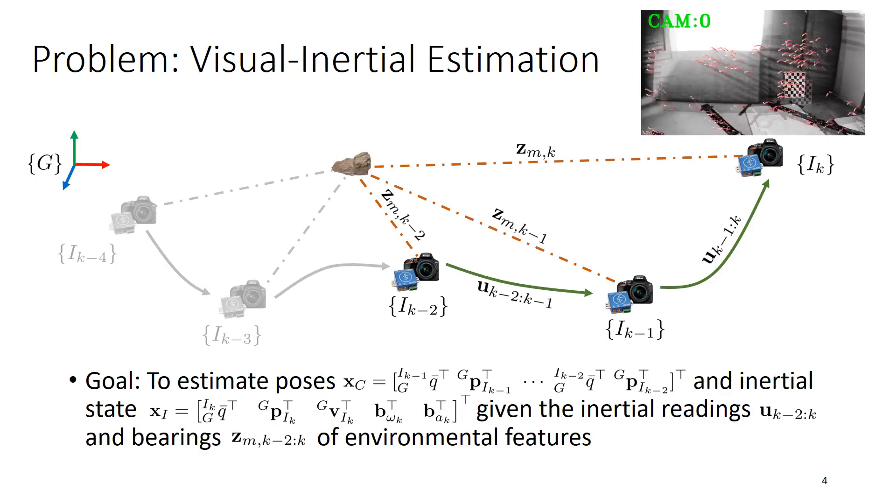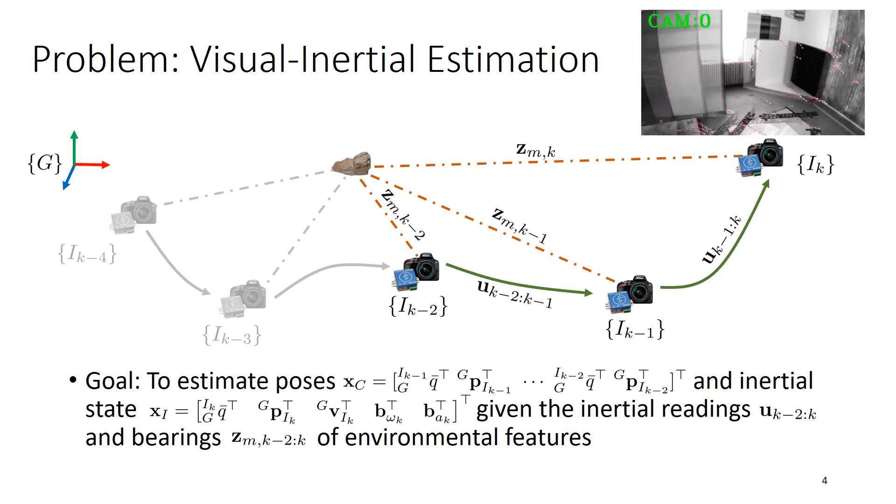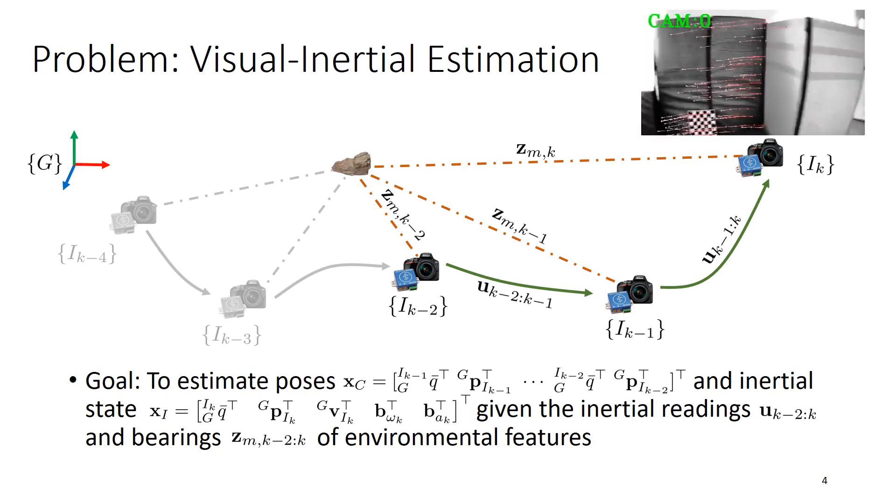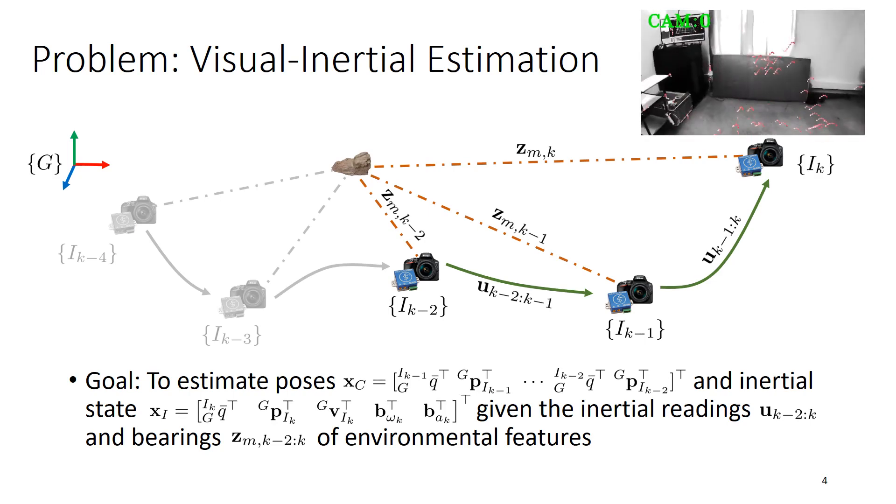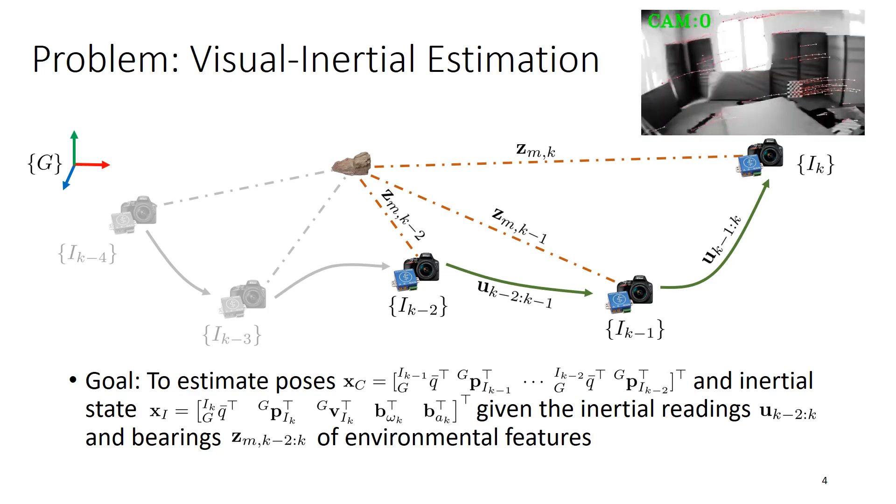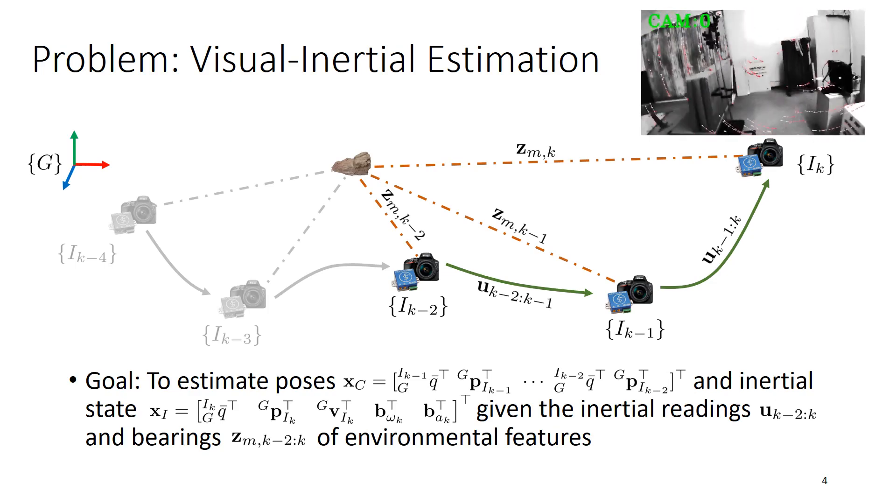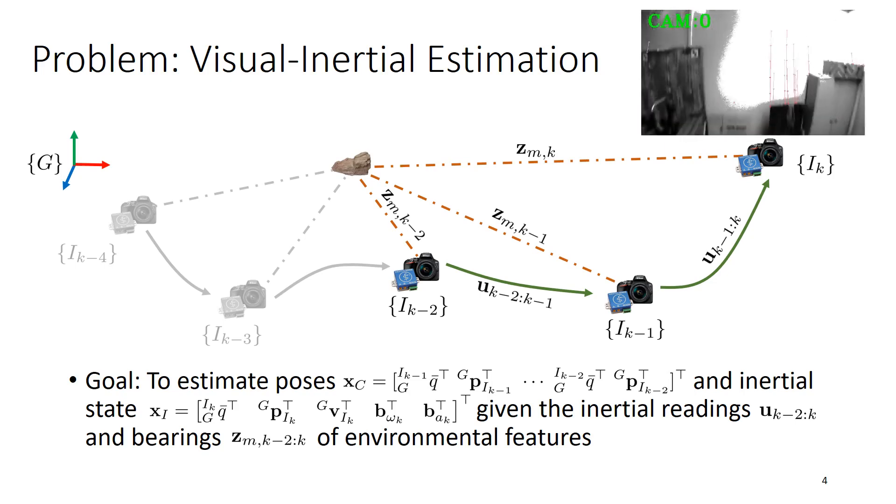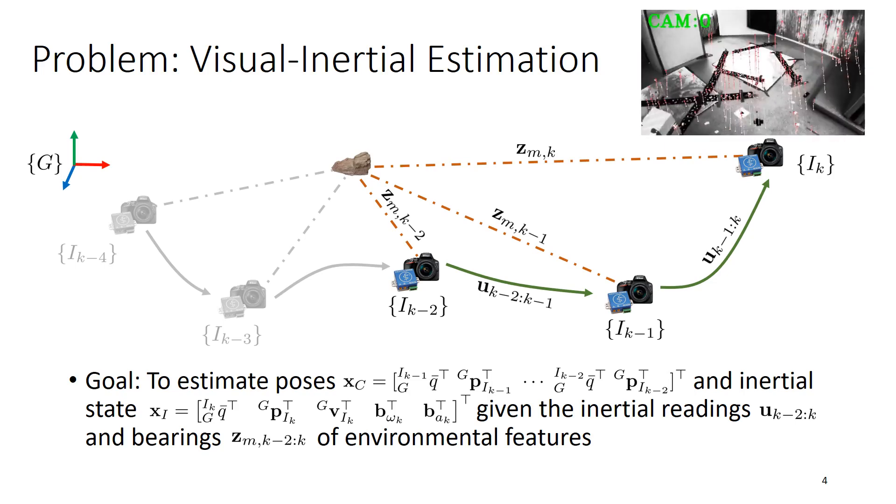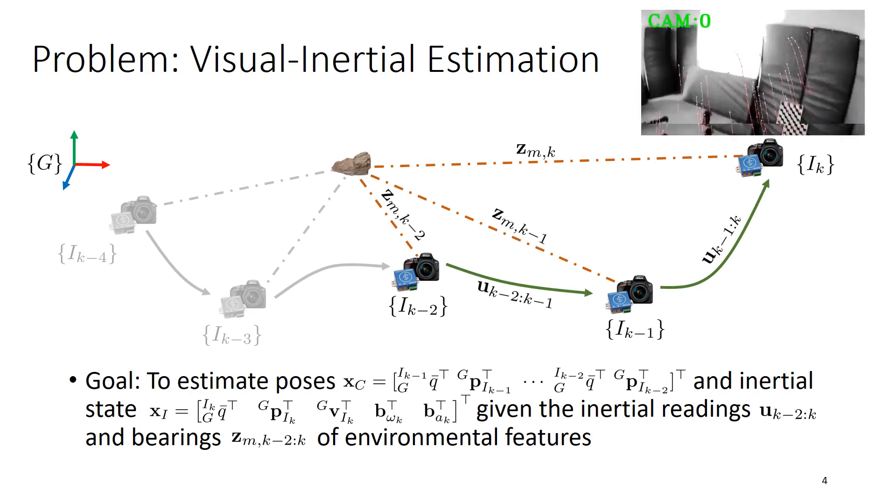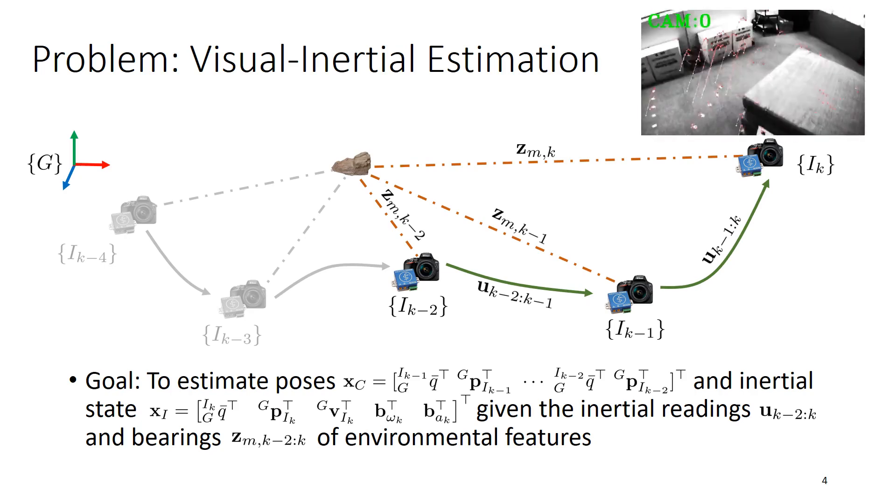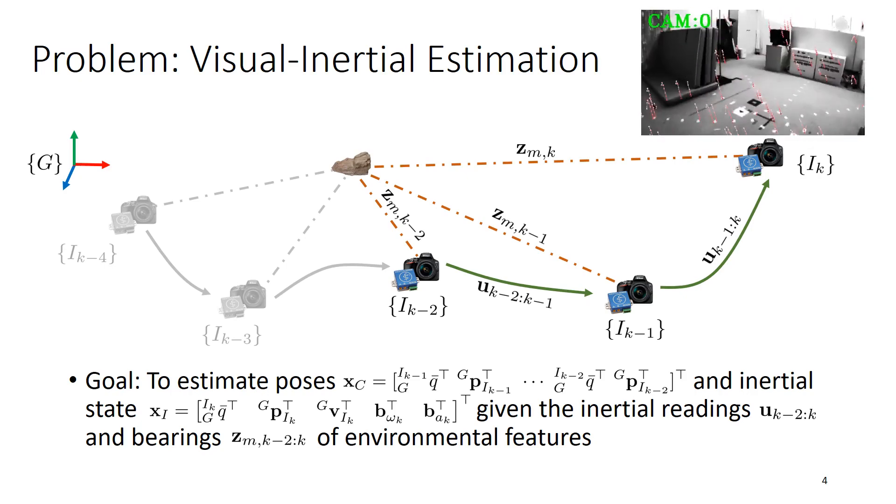The key problem that we're trying to solve in visual inertial estimation is we're trying to estimate a historical series of poses through the environment of the camera IMU system. As the camera IMU move from one time step to the next, for example from IK-2 to IK-1 to IK, it collects both inertial measurements, in this figure denoted as U, from one time step to the next. Additionally, it collects visual bearing information to environmental features.